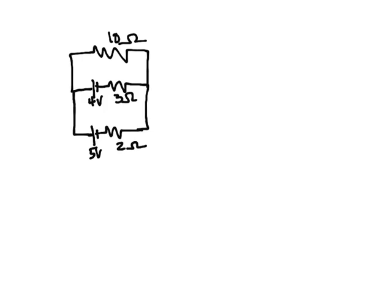Okay, so when we talk about Kirchhoff's law, we need to think about both the loop rule, so sigma V loop equals zero, and the junction rule, sigma I in equals sigma I out.